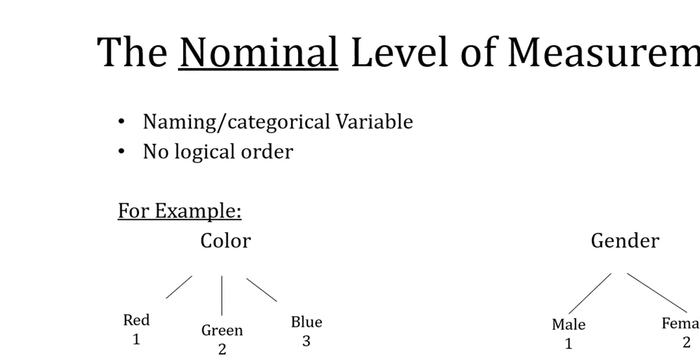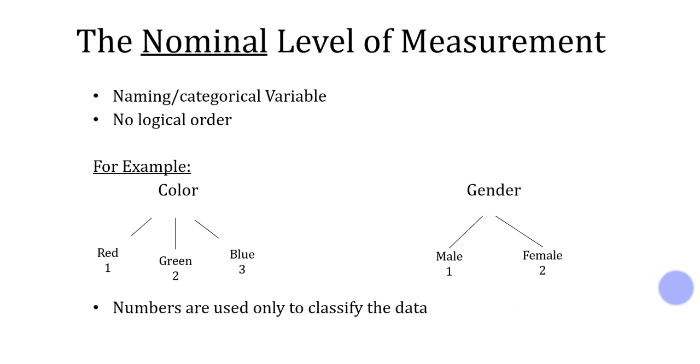So here I have used color and gender. The first example is color, and here there are different options, different names of color: red, green, and blue. And there is no order. I can write green instead of writing red first, and I can write blue instead of writing red first or green first. But I have assigned different numbers here because I have to classify the data, because these are the qualitative form of data and I cannot process the qualitative data into SPSS. We have to first codify the data and then we can process and go for any other analysis. So therefore, I have just used some codes here, but there is nothing to do with some order. There is no logical order in this example.